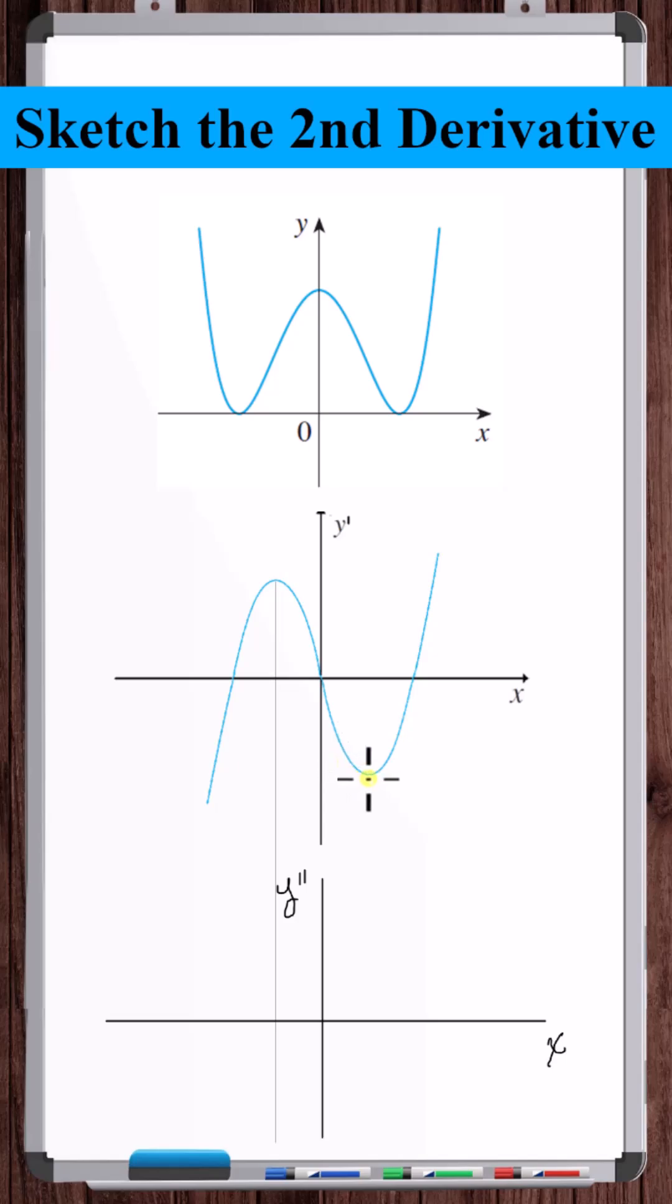Here we see the slope switches from negative to positive, so the second derivative will cross the x-axis here as well. As x goes to negative infinity, the slope of the first derivative is approaching positive infinity.